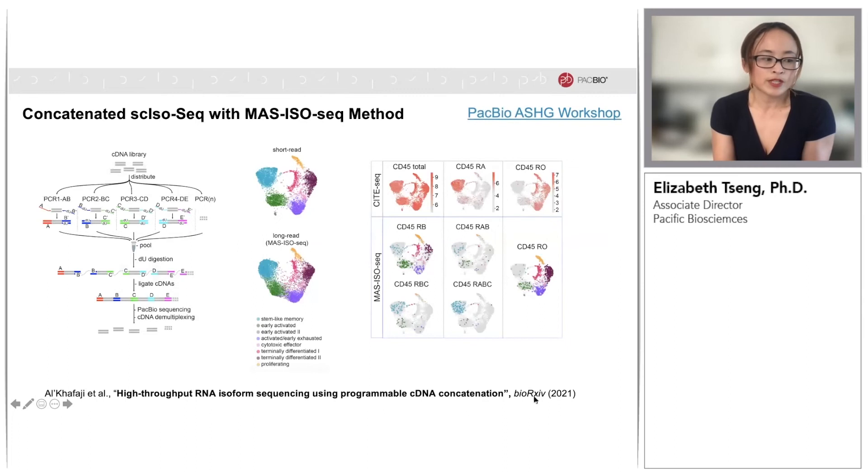An even higher throughput increase was demonstrated earlier this week at the PacBio ASHG workshop. Authors from the Broad Institute developed MAS Iso-Seq, which enforces a 15-fold concatenation that increased the throughput of up to 20 million deconcatenated high-quality HiFi reads, or up to 40 million if including some of the lower-quality reads. Once again, they were able to recapitulate the cell types using long-read data.